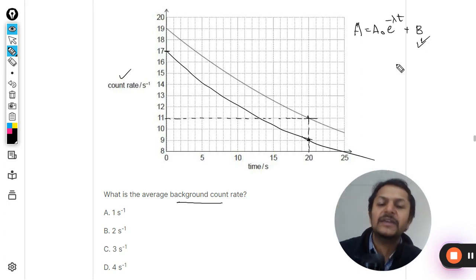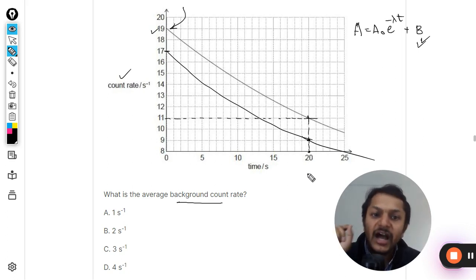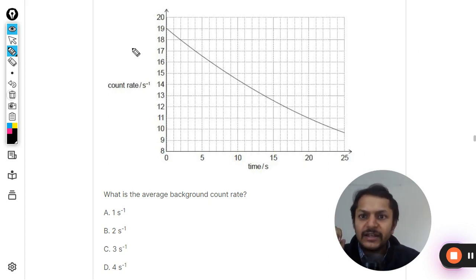This count rate which is 19 is including the background radiation. The data given is that 20 should become the t_half, the half life. It means when you subtract something, let's say you are subtracting x number of squares here, after 20 also you are going to subtract the same value.